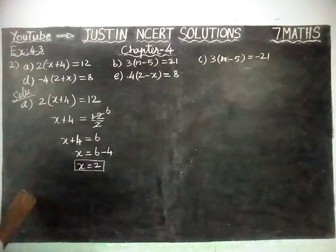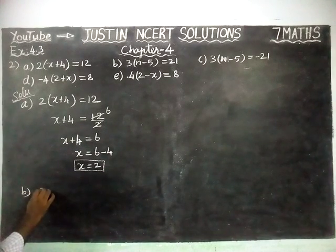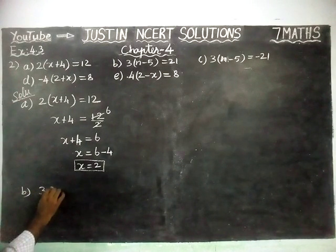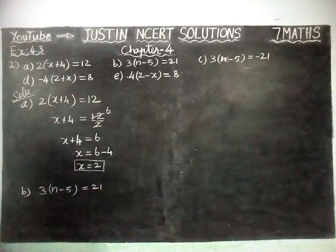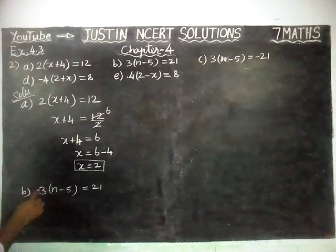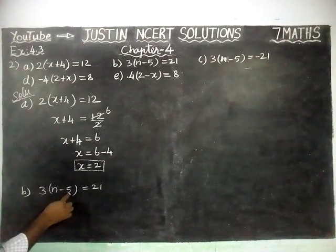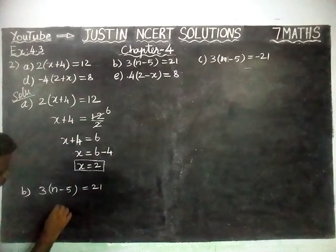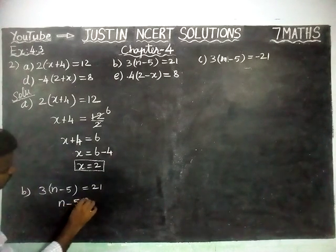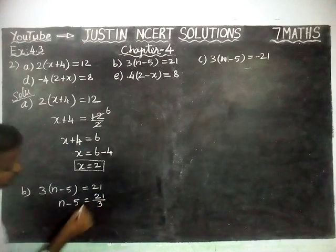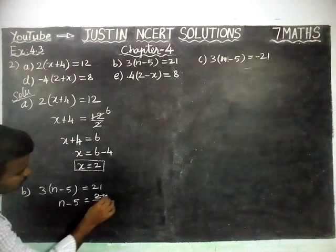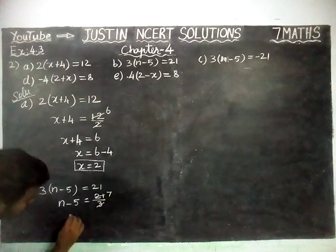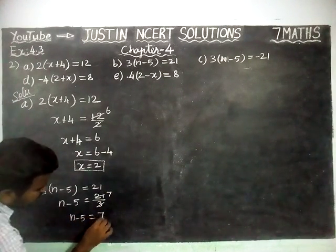Next, point B: 3(n - 5) = 21. Here, 3 is there. I am going to take this 3 into the right hand side, because 3 into n minus 5 is there. So n minus 5 is equal to 21 divided by 3. There is a possibility to simplify: 7 threes are 21. So n minus 5 is equal to 7.